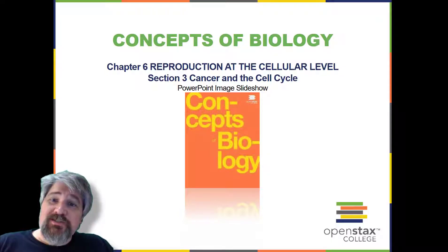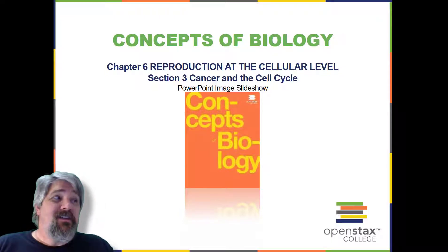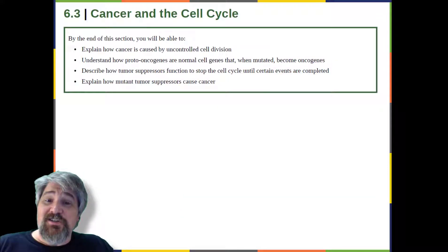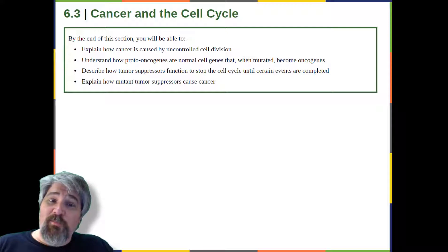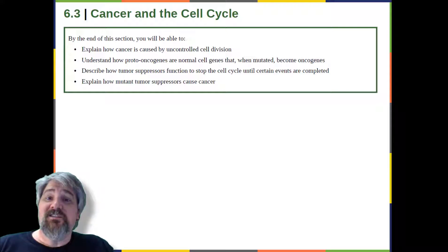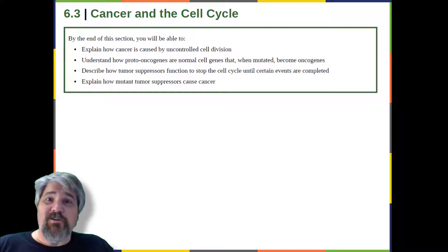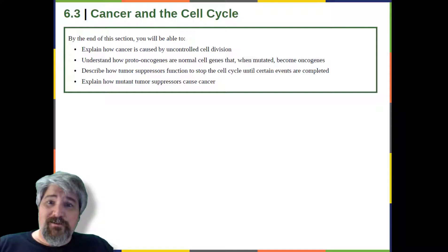Welcome back to Section 3 of Chapter 6: Cancer and the Cell Cycle. By the end of this section, you will be able to explain how cancer is caused by uncontrolled cell division, understand how proto-oncogenes are normal cell genes that, when mutated, become oncogenes, explain how tumor suppressors function to stop the cell cycle until certain events are completed, and explain how mutant tumor suppressors cause cancer.